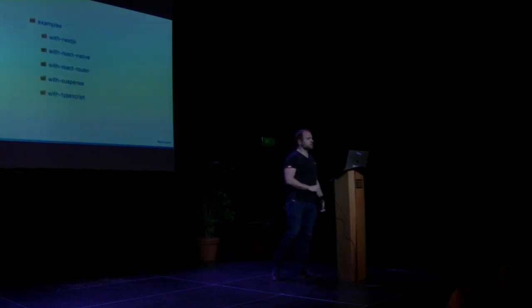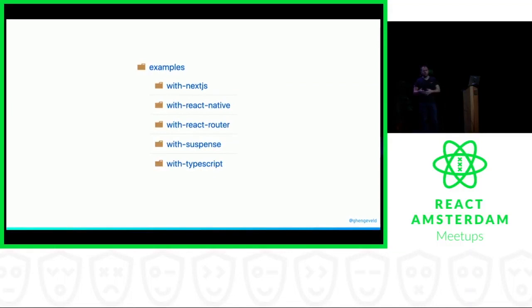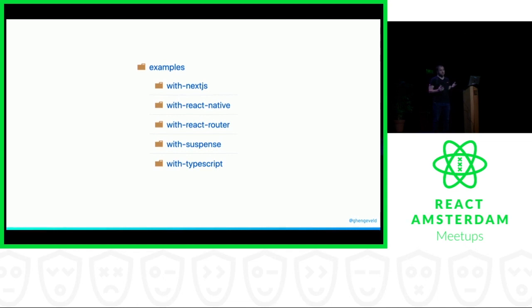On the subject of other libraries in the ecosystem, I want to have examples for each of them. In the repo for React Async there's a bunch of examples - for Next.js, React Native, React Router, Suspense, TypeScript, all of those things. In CI, I run all the tests for all of the examples against the version of React Async I'm about to release. I originally wasn't doing that and it bit me so often that I really wanted to automate it. I switched from Travis to CircleCI and at that point said, let's do it properly now.